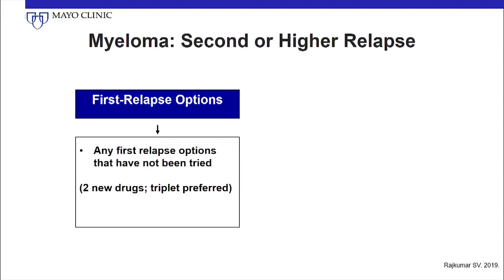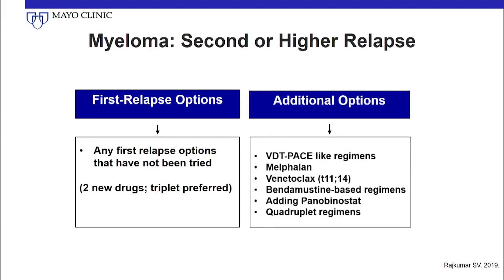Any of the first relapse options are reasonable in addition to some additional options you can consider. Some patients who have very aggressive relapse might need a VDT-PACE-type regimen. Melphalan is still a great drug — intravenous melphalan at a single dose or even oral melphalan in combination with other drugs. Venetoclax, particularly for 11;14 patients. Bendamustine-based regimens. Adding panobinostat to proteasome inhibitor-based regimens and trying four or five drug regimens may all be reasonable in the absence of clinical trials. Clinical trials at every step need to be considered.